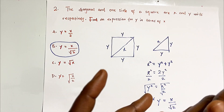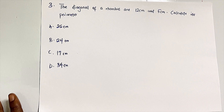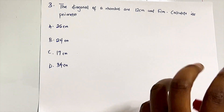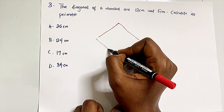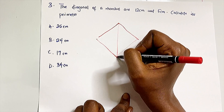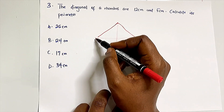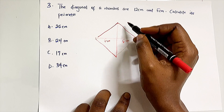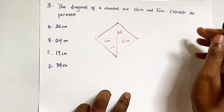Question three says: the diagonals of a rhombus are 12 cm and 5 cm — find the perimeter. We saw a similar question in the last video but that asked for area; this time we need the perimeter, which is the sum of all four sides. Drawing it out: the longer diagonal is 12 cm, so each half is 6 cm; the shorter diagonal is 5 cm, so each half is 2.5 cm.